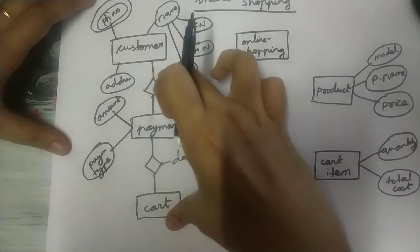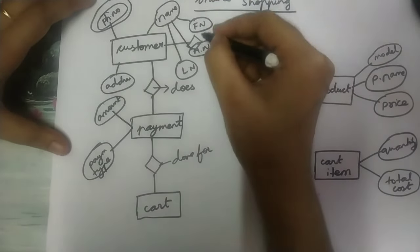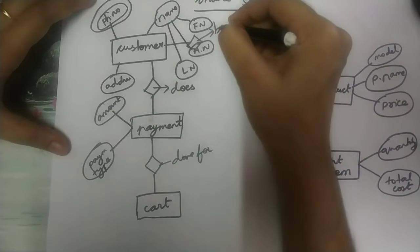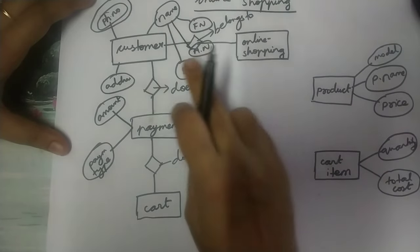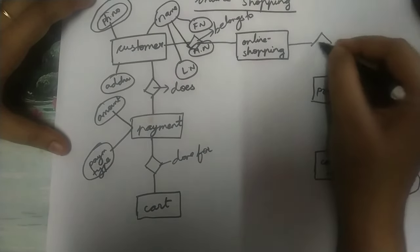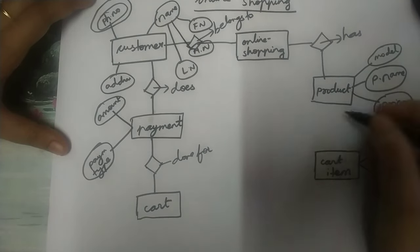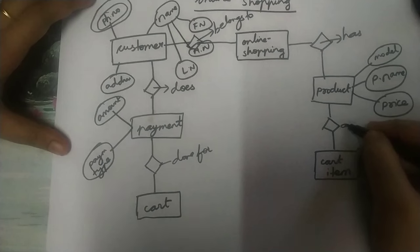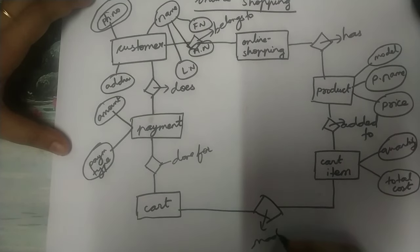We should go like this — the customer, here I should draw a diamond box, and inside this diamond box I should write 'belongs to.' So the customer belongs to online shopping — the customer has come here for shopping online. Next, we should connect it with product. Online shopping has various products, and the products were added to — so inside this diamond box 'added to' will come. Next, from cart item I should connect another diamond box and write 'made of' inside this.